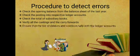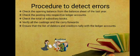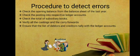The next step is to ensure that the list of debtors and creditors tallies with the ledger accounts. The auditor can ask for confirmation from debtors and creditors directly, as well as verify against the ledger accounts.